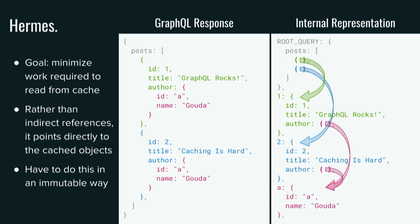The way Hermes does that is by representing state as closely as possible to how your data comes back from the server. It represents the cache as a graph internally. Looking at the same query as before, rather than having string references that point to node IDs, Hermes points directly to the underlying objects. So you've got the posts — they point to the two posts referenced by one and two. Within each post there are authors, and all of those point to the exact same JavaScript object pointed to by the key A. There's a bunch of bookkeeping under the covers to make this happen. Hermes does immutable updates to this.